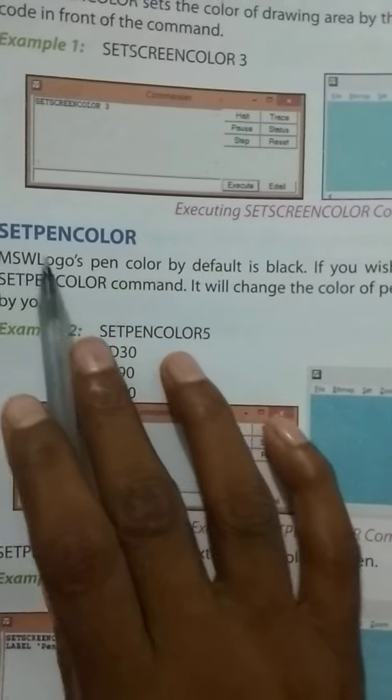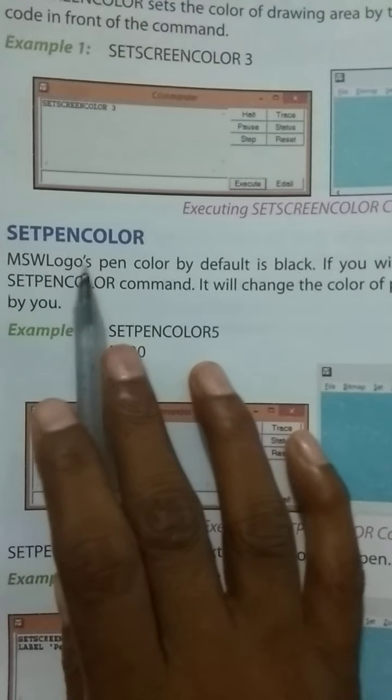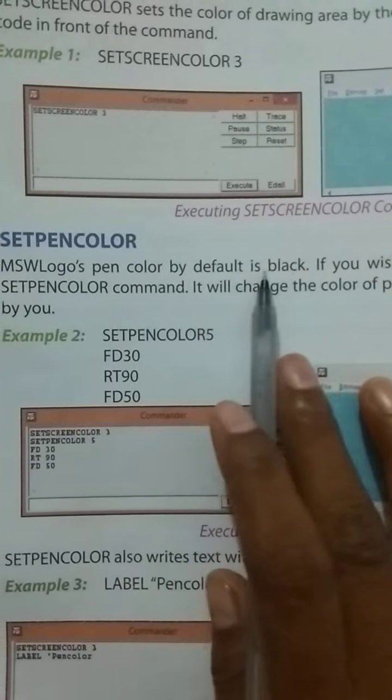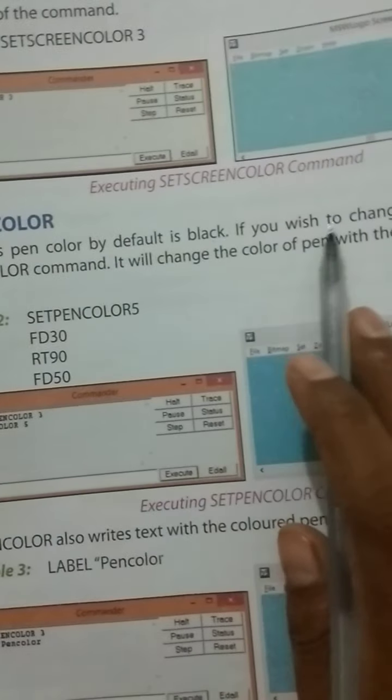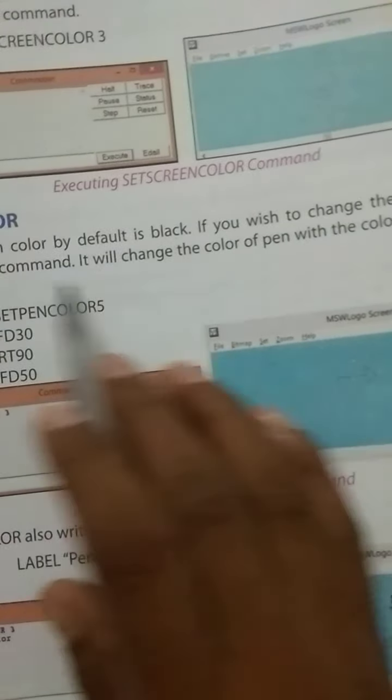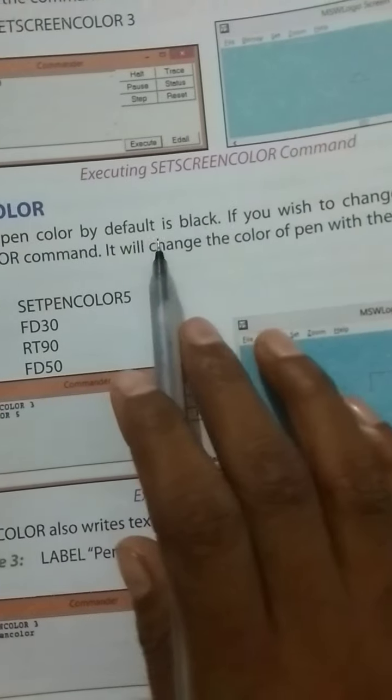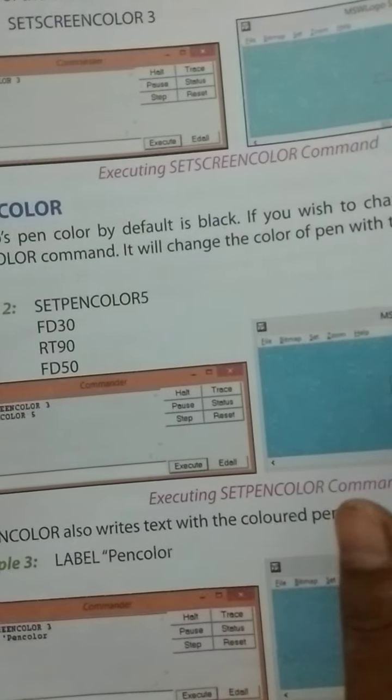Set paint color in MSW Logo: paint color by default is black. If you wish to change the paint color, use the set paint color command. It will change the color of paint with the color code specified by you.